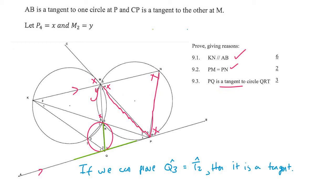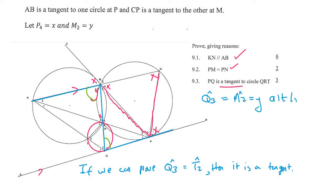Looking at the parallel lines we found, this angle and this angle must be the same because of alternate angles. So we can say angle Q3 is equal to angle M2, which equals y — because of alternate angles since KM is parallel to QP. Now if we can show that T2 is also equal to y, then we've done it and we know PQ is a tangent.